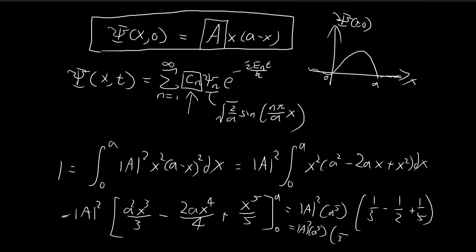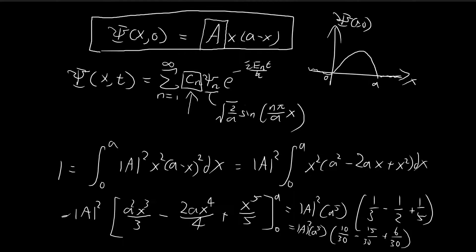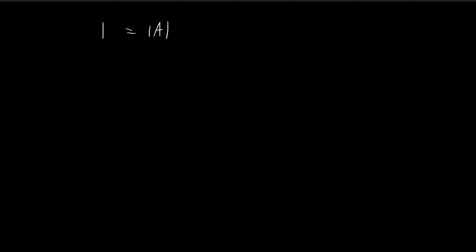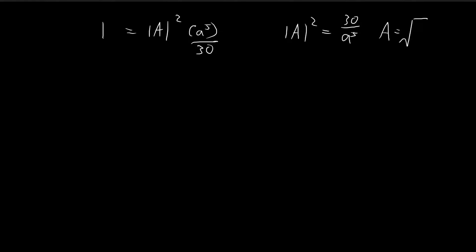Doing the arithmetic: 1/3 minus 1/2 plus 1/5, with common denominator 30, gives 10/30 minus 15/30 plus 6/30, which equals 1/30. So if the left-hand side equals 1, the right-hand side is |A|² times a⁵/30. Therefore A² = 30/a⁵, and we can choose A equal to the square root of 30/a⁵. Under this choice, the initial wave function is normalized.